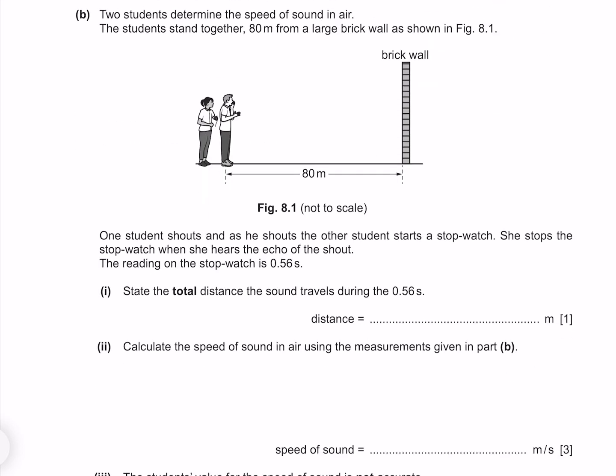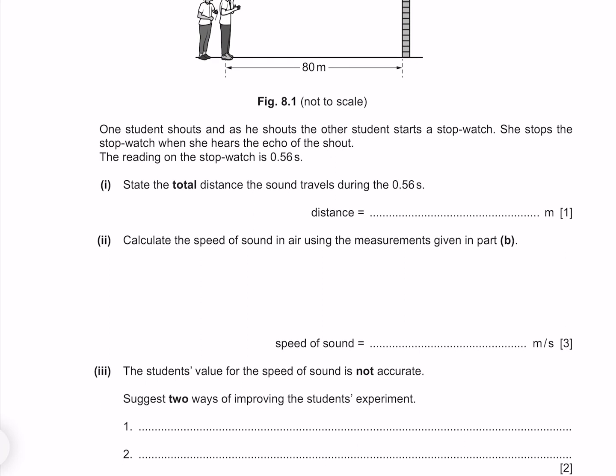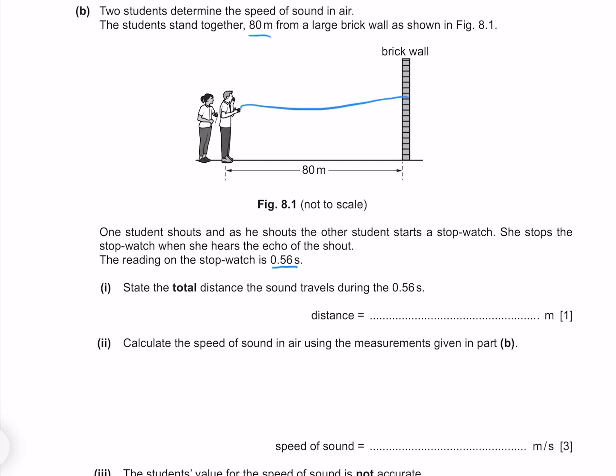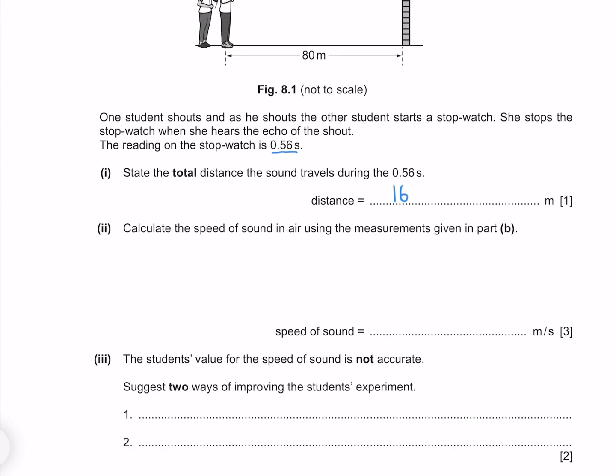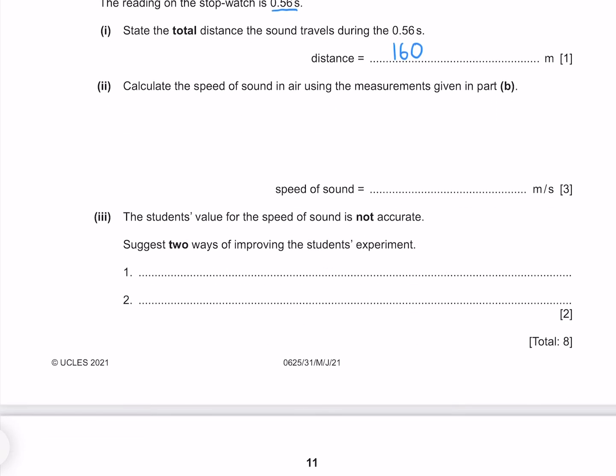Two students determine the speed of sound in air. The students stand together 80 meters from a large brick wall, as shown in figure 8.1. One student shouts, and as he shouts the other student starts a stopwatch. She stops the stopwatch when she hears the echo of the shout. The reading on the stopwatch is 0.56 seconds. State the total distance the sound wave travels during the 0.56 seconds. Our sound wave has to go to the brick wall and then return. The total distance is therefore going to be 2 times our 80, which is 160. Calculate the speed of sound in air using the measurements given. Our velocity is distance divided by time, where our distance is 160 and our time is 0.56, which gives me 286.7 meters per second, or to two significant figures 290.